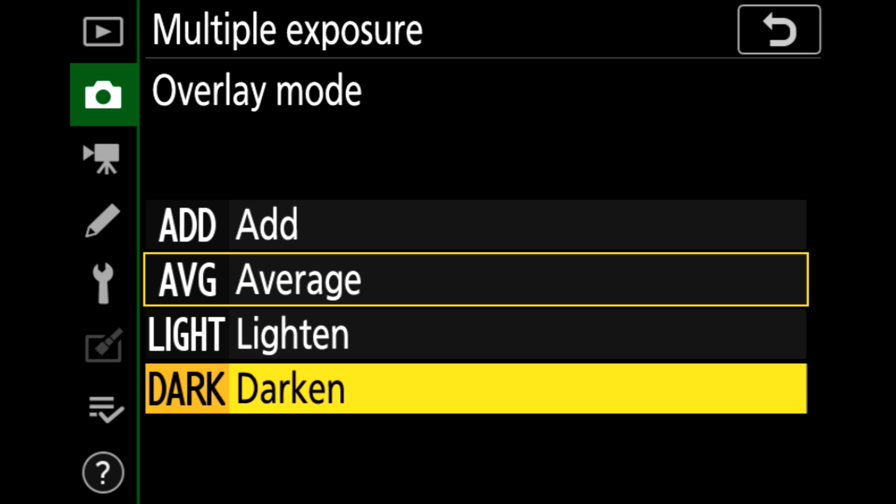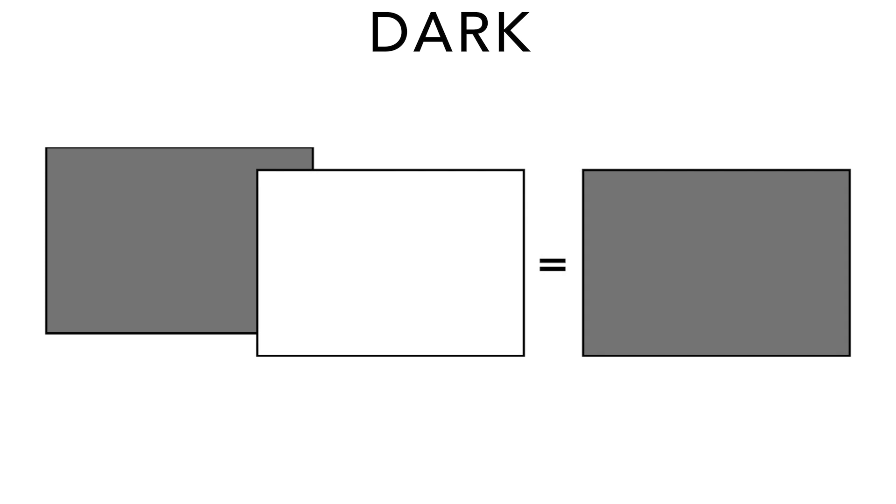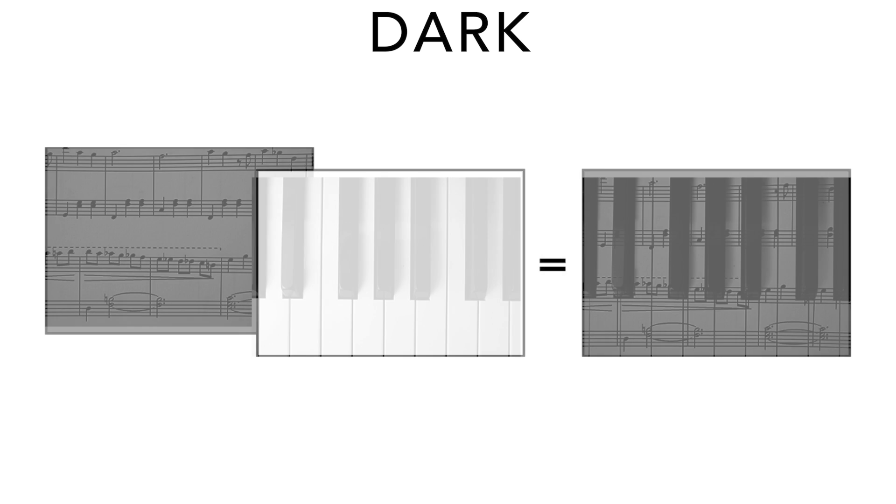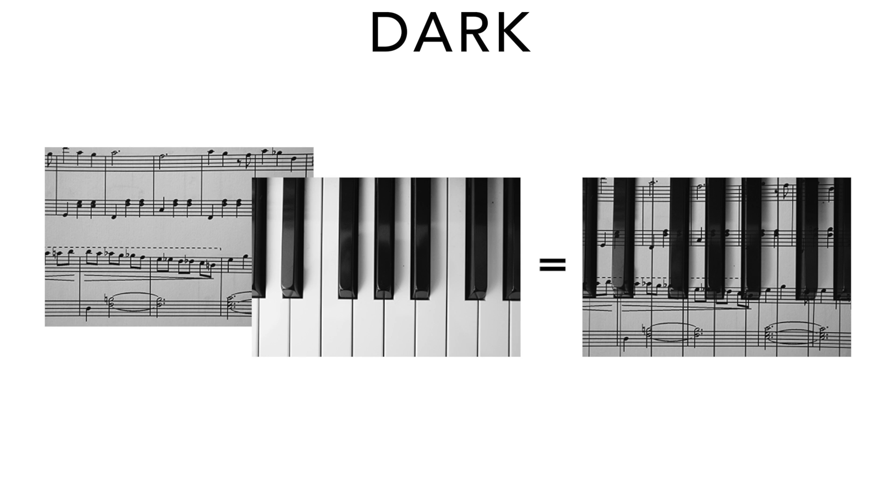And then you have dark and dark is the opposite of bright or light. The camera is going to pick the darkest RGB value at each pixel location. So if that pixel is gray in one exposure and then black in the other exposure, the camera is going to pick the black RGB value for the final exposure. If that pixel is gray in the first exposure, but then white in the second exposure, the camera is going to pick that gray pixel. And this is what our example looks like in the dark multiple exposure blending mode, which is honestly my favorite.